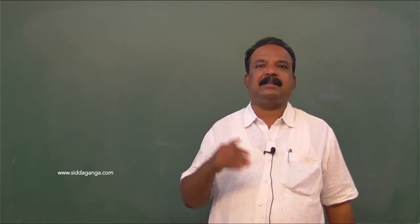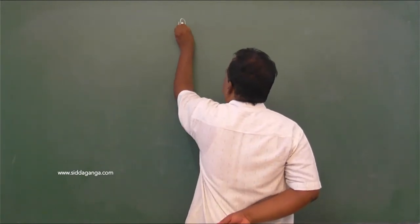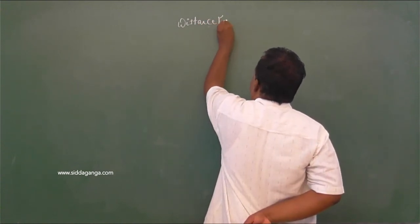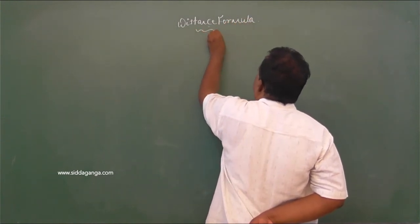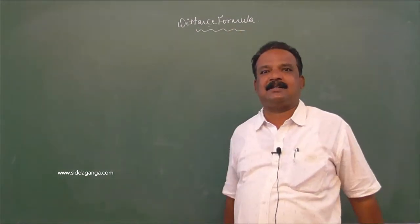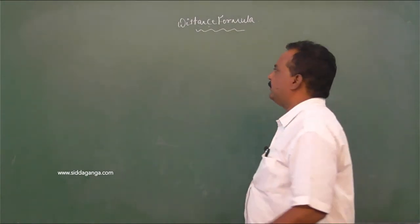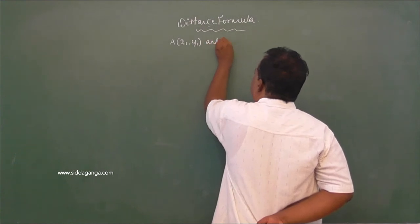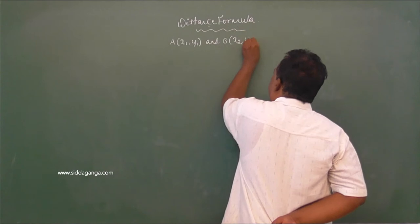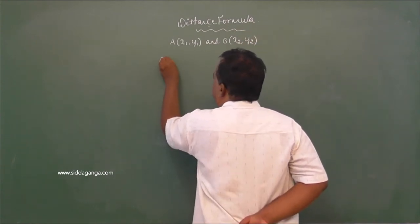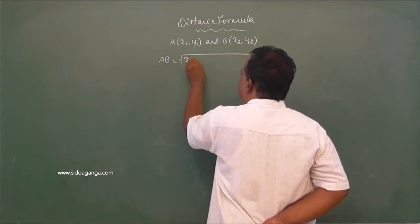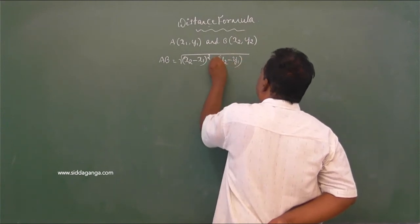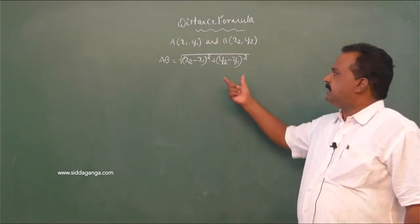Today we will continue the discussion with the distance formula. This distance formula is used to find the distance between any two points. If A(x1, y1) and B(x2, y2) are any two points in a plane, then the distance formula is given by: AB = √[(x2 − x1)² + (y2 − y1)²]. This is the distance formula.